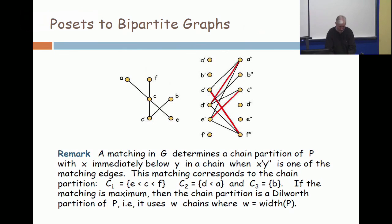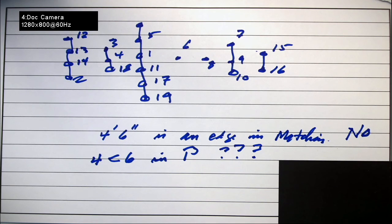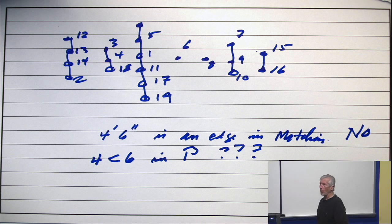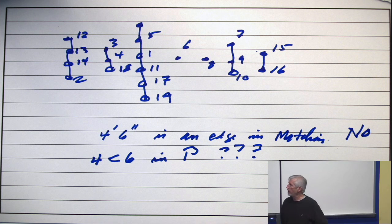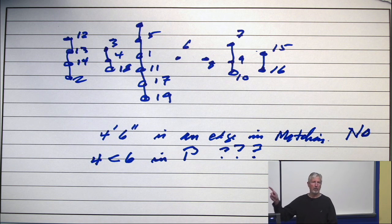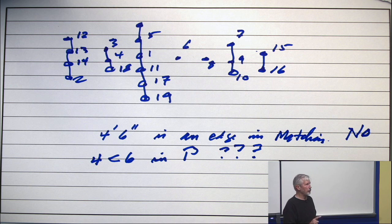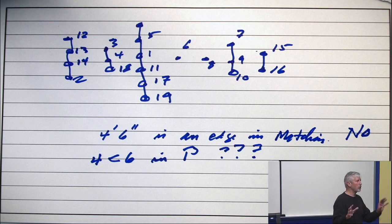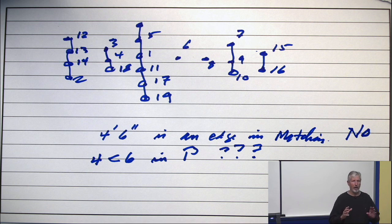Go back to the dot cam. If this chain partition comes from a maximum matching, we are going to conclude that the width is 1, 2, 3, 4, 5, 6, 7. It's got seven chains, but the size of the matching was 13. There's a disconnect between them. They're related, but they're not the same.